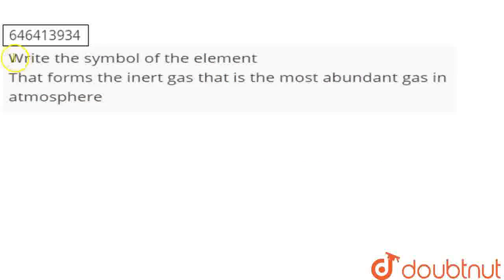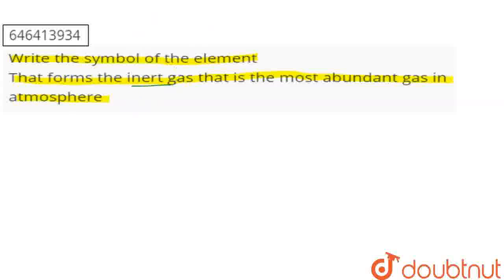The question is to tell you the symbol of the element that forms an inert gas and is the most abundant gas in the atmosphere. That means, to tell the symbol of the element that is the most abundant gas in the atmosphere and it is an inert gas.